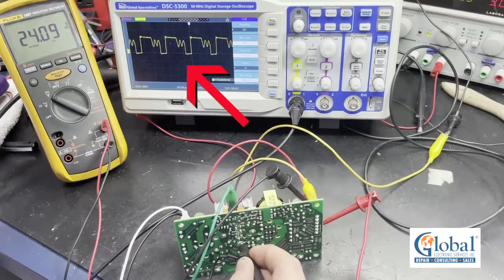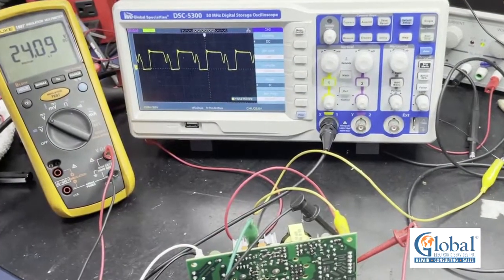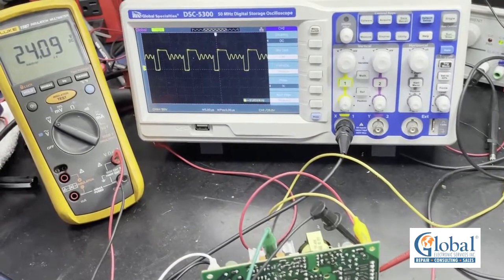As you can see, the width at the top of the waveform increases to support the load. If we decrease the load, you can see the width get shorter.